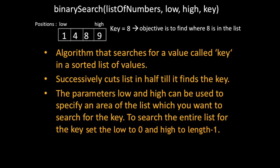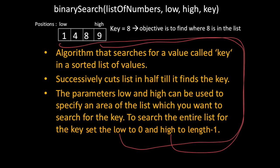So you can see that the low index is at position zero and the high index is at position three where the length of the list is four so four minus one is three which means that here we're searching through the entire list for the key of eight.